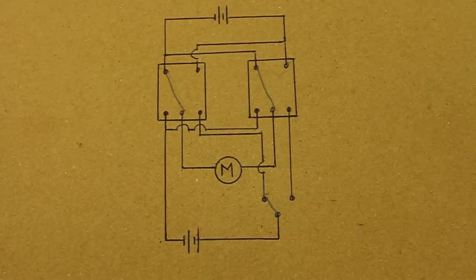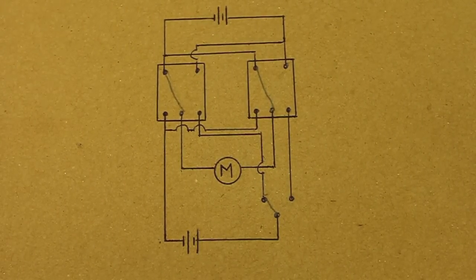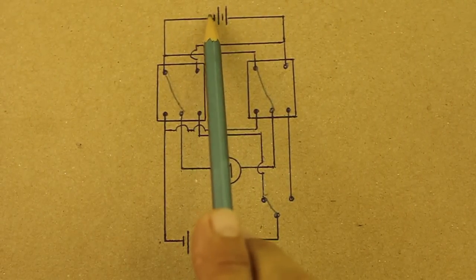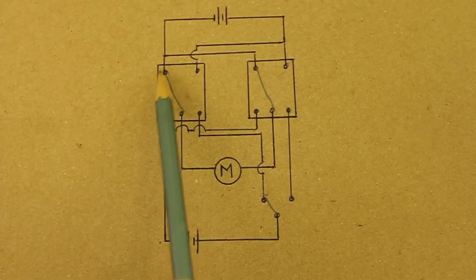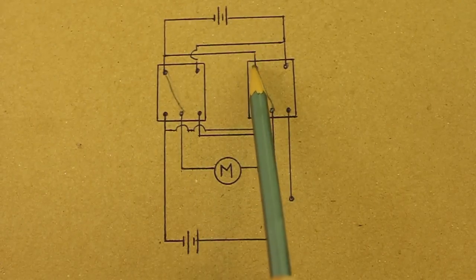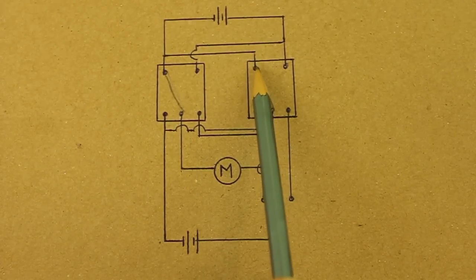Okay, let me now explain how the circuit works. As you can see, the negative of the battery goes to this point in this relay and to the similar point in the other relay.